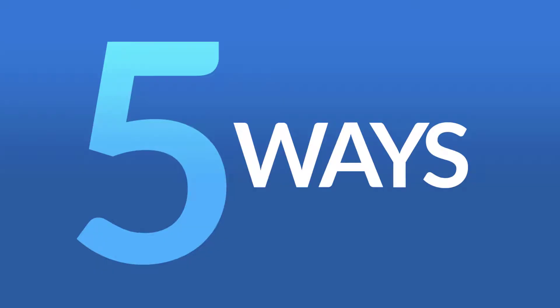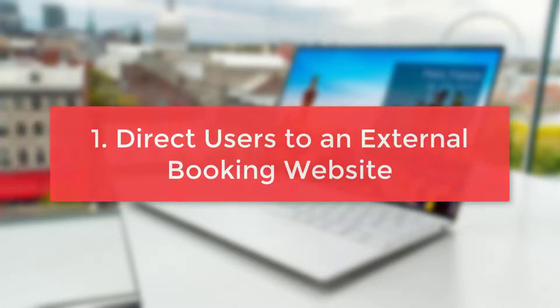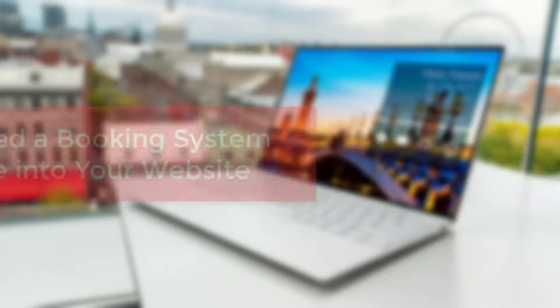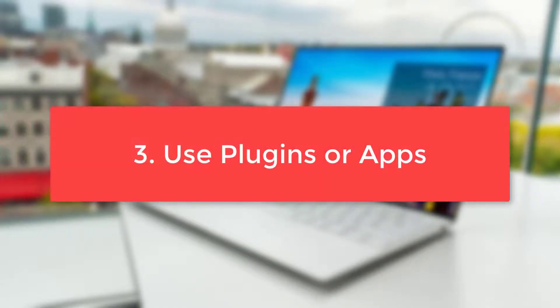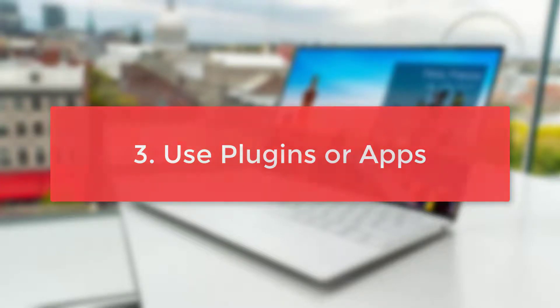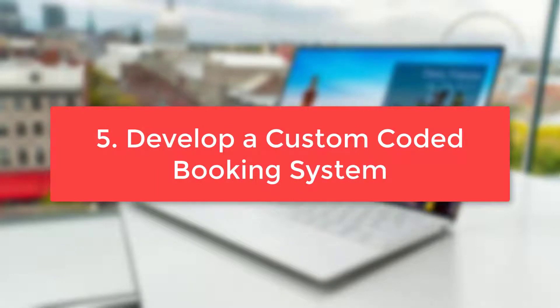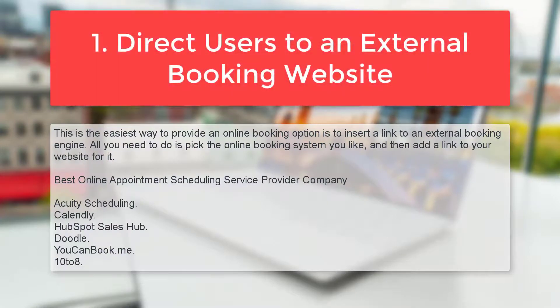Basically, there are five different ways to add an online booking system to your website. Number one: direct users to an external booking website. Number two: embed a booking system iframe into your website. Number three: use a plugin or app. Number four: use an API. Number five: develop a custom coding booking system.